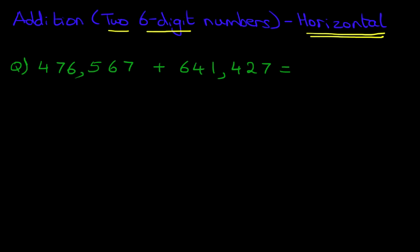So what we do is we go through these systematically, digit by digit, column by column. Let's start on the left hand side, we've got hundred thousands.